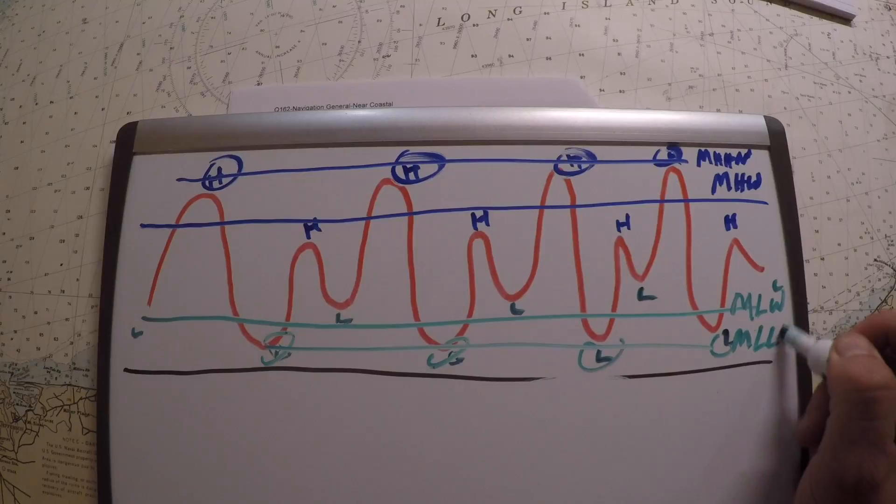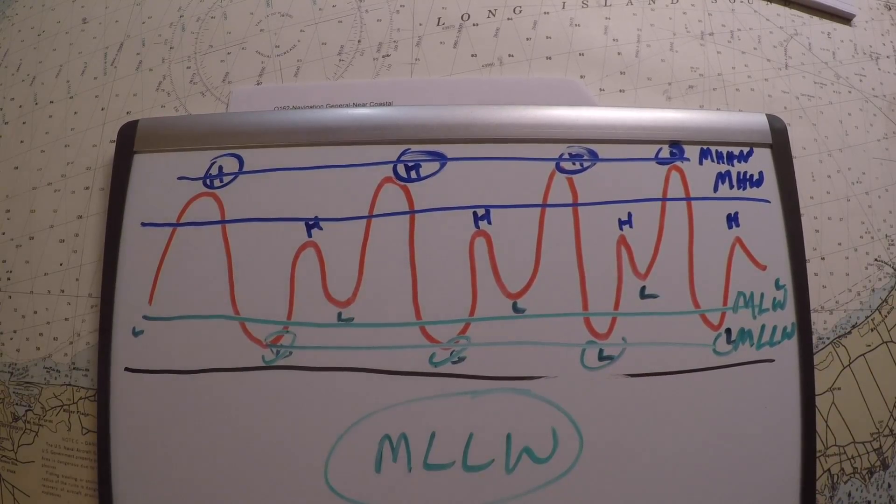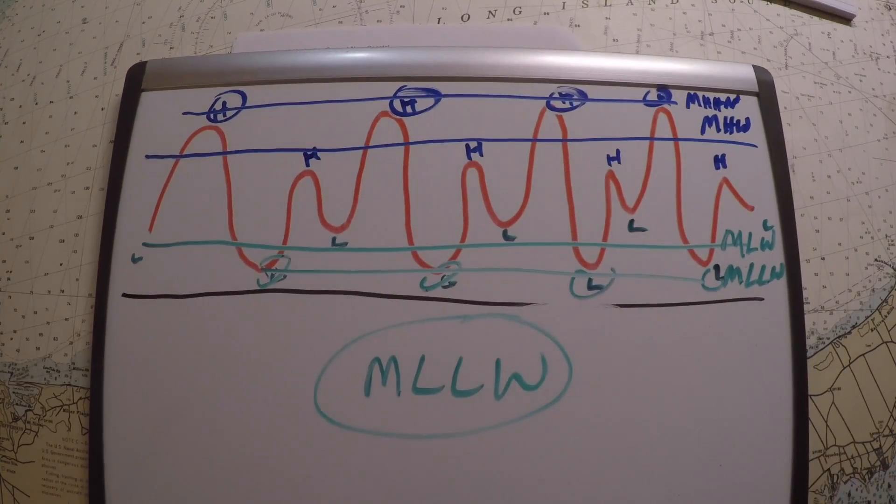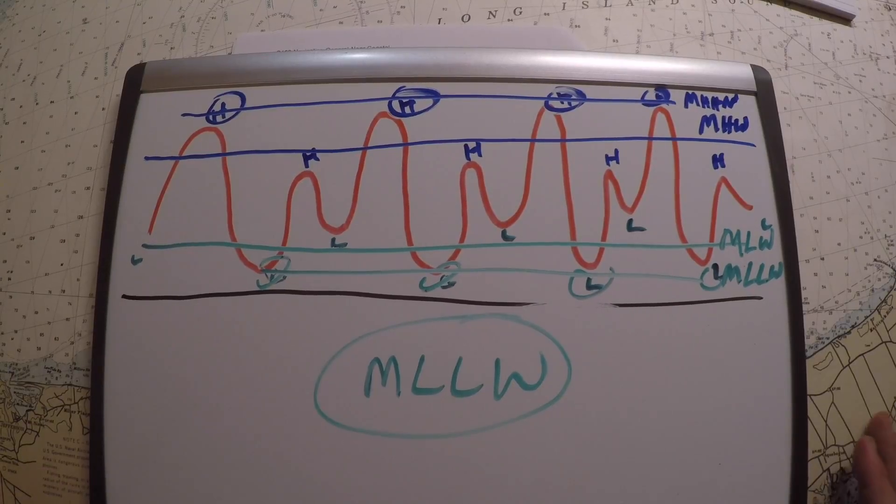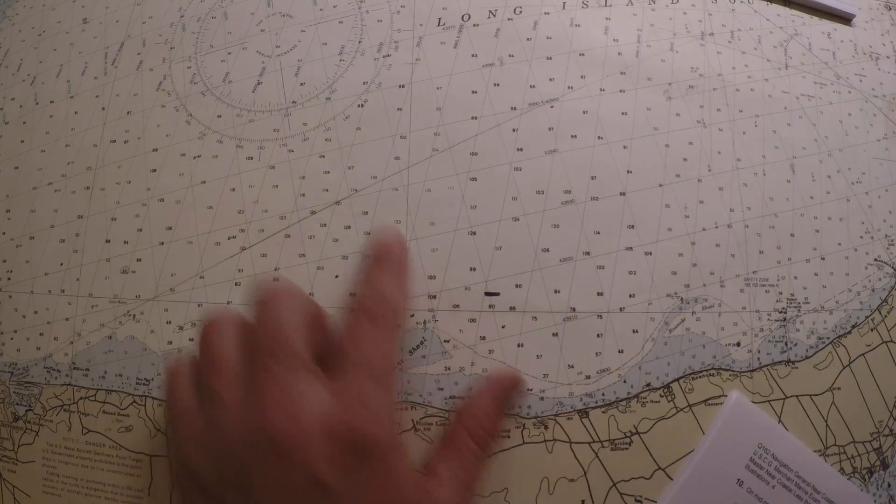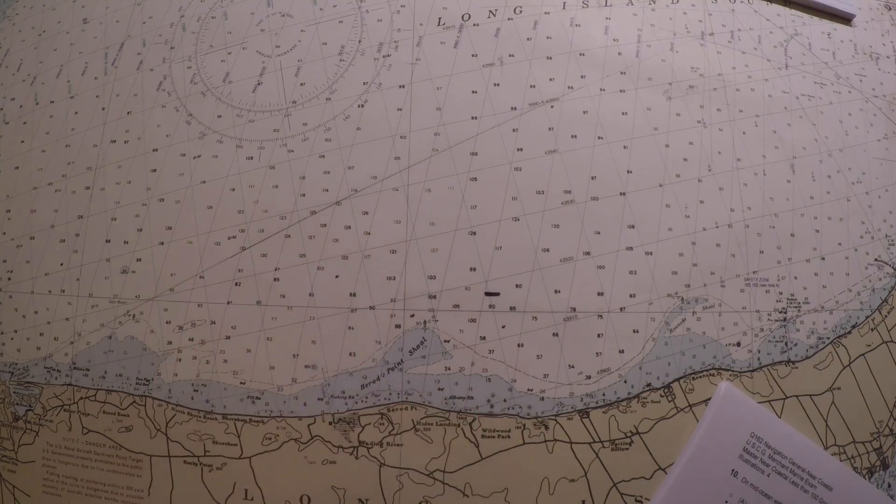This is what most chart datums are in the United States: mean lower low water. It's the lowest of the lows, and so that allows you some flexibility when you're driving your ship over a chart. If you see 126 feet, you know that's pretty much as shallow as it's ever going to get. It's usually going to be more than that, so it's a safety margin built in there.